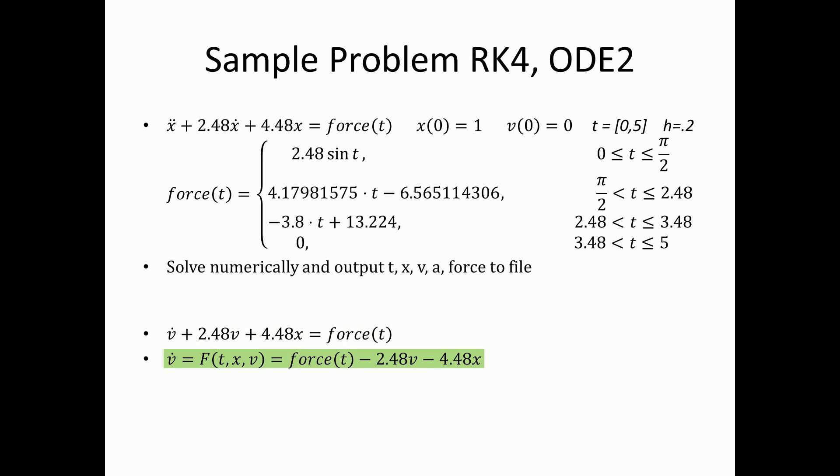The first step is to substitute the intermediary term into the equation. And then, you obtain the slope of v or v dot as a function of time, position, and velocity. In this case, force of t minus 2.48v minus 4.48x.